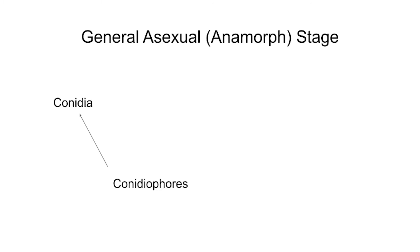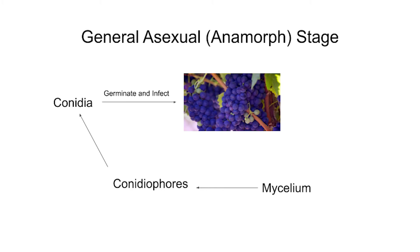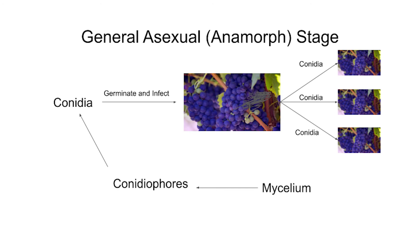For the anamorph, the asexual stage involves the germination of conidia from conidiophores attached to mycelia. The conidia then germinate and infect plant tissue. The gray mold that results can in turn release conidia once again. Conidia is also the primary method of spore dispersal by Botrytis cinerea. Sclerotia can also germinate to produce mycelium, which can start the process over again by producing conidiophores.